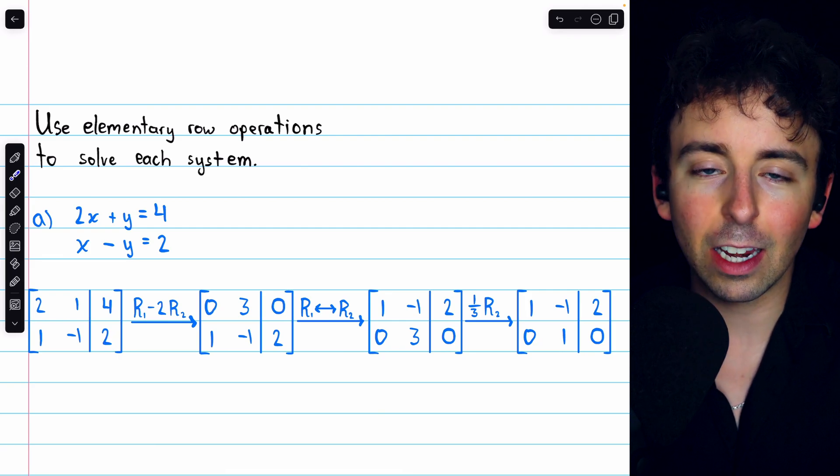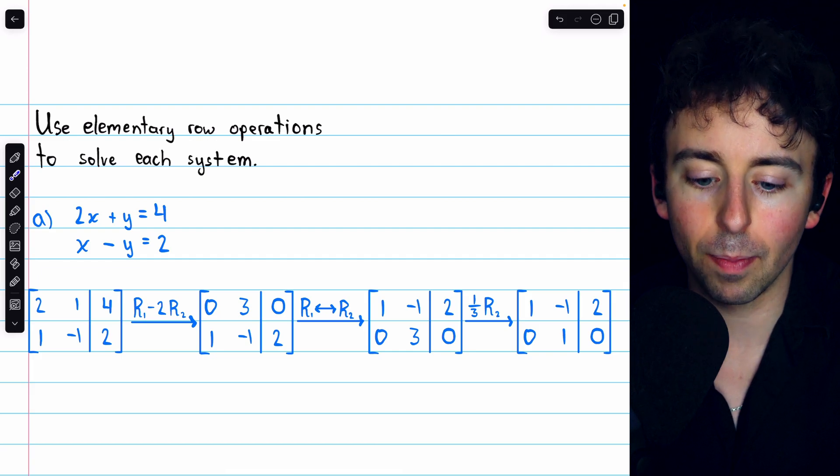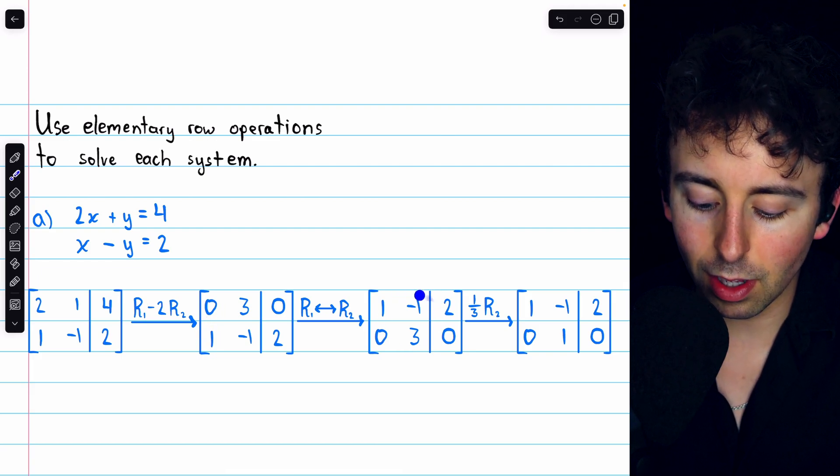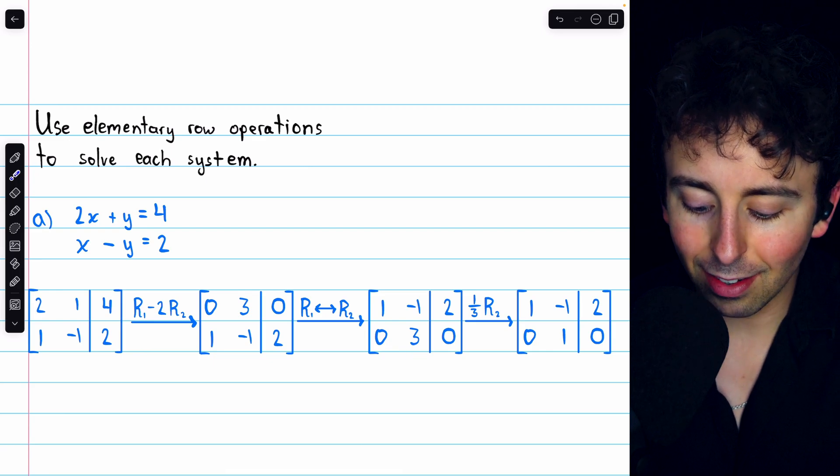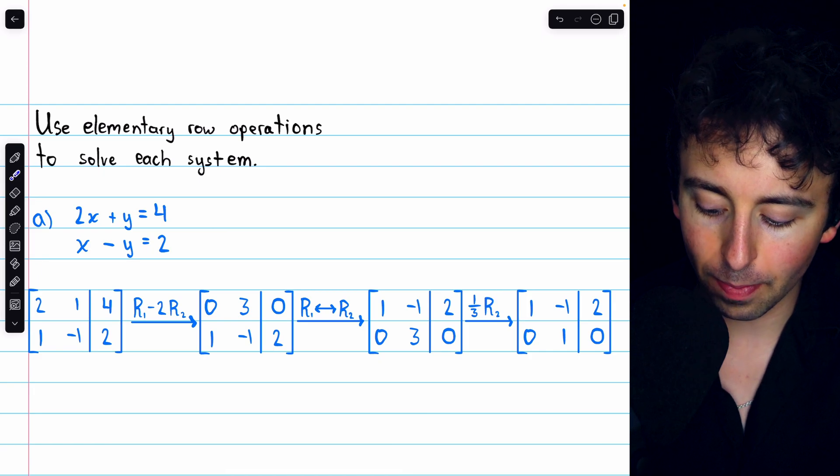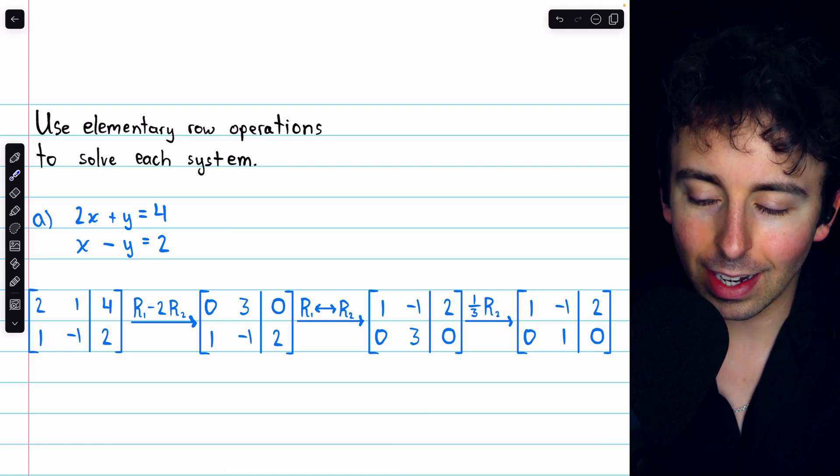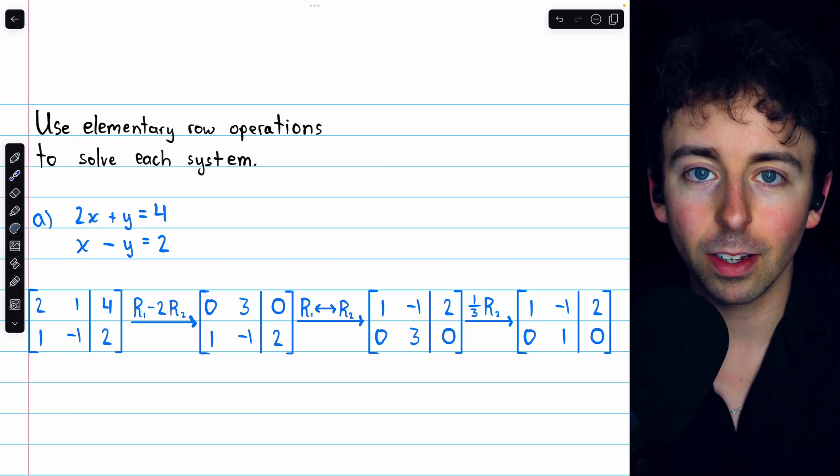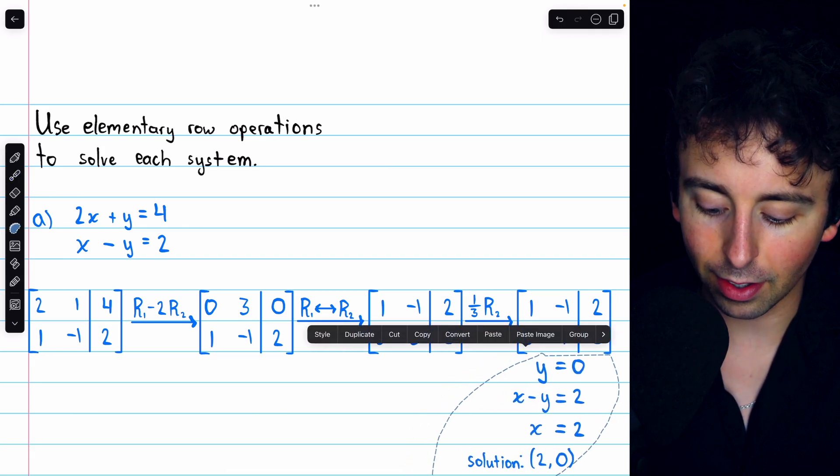Now we have 0 as a leading entry. We'd really rather have 1 up there, so let's swap rows 1 and 2. That gets us to this matrix here. We would like this 3 to be a leading 1, so let's multiply row 2 by 1 third. That gets us here, and in this case, we actually have now completed Gaussian elimination, and that is sufficient to solve this system.